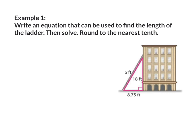Example 1: Write an equation that can be used to find the length of the ladder, then solve. Round to the nearest tenth. The first thing I'm going to do is label my picture. The shortest leg is 8.75 feet, so that will be side a. The medium leg is 18 feet, that will be side b. Across from the right angle is the hypotenuse, that's going to be side c.